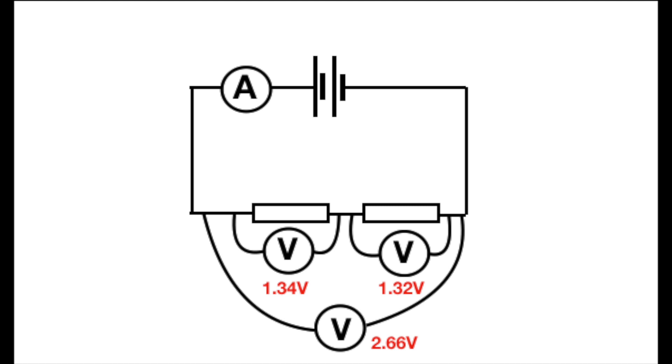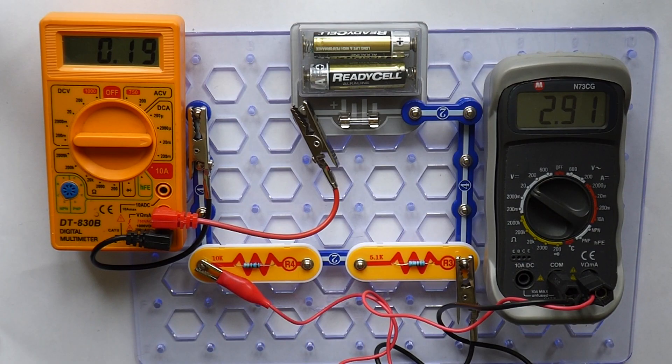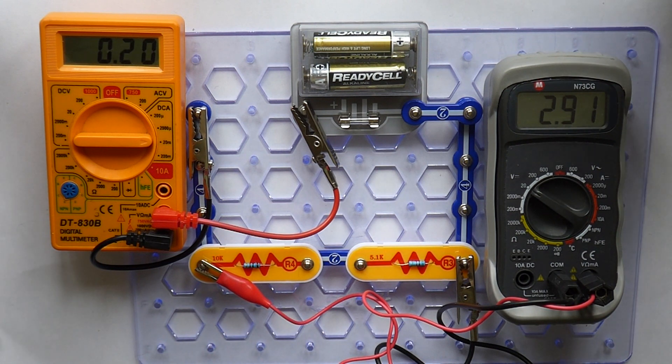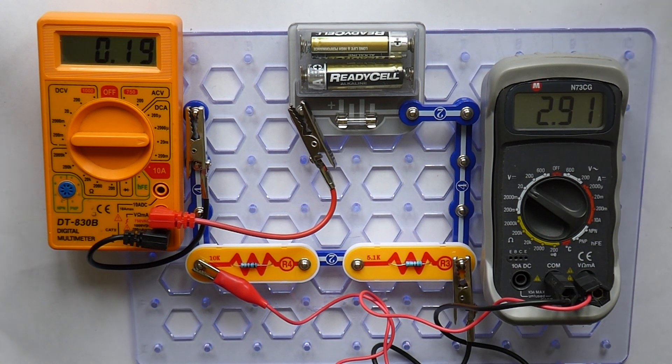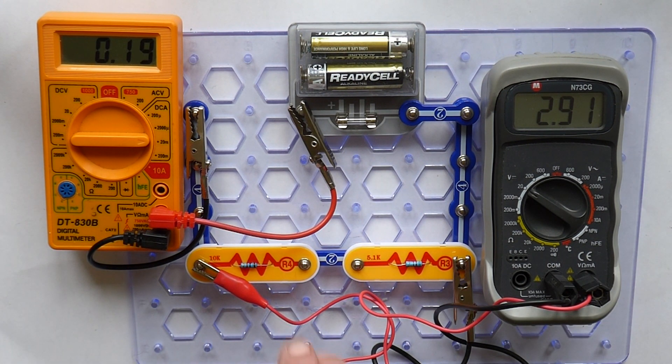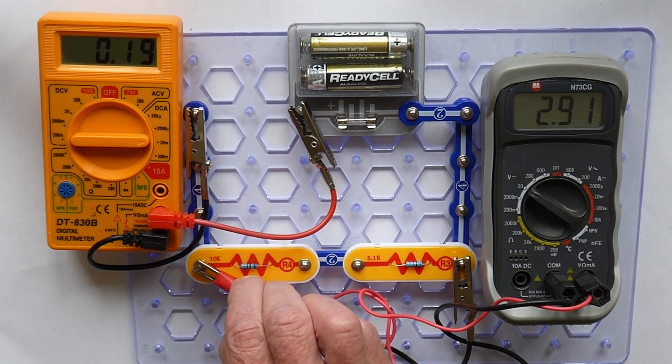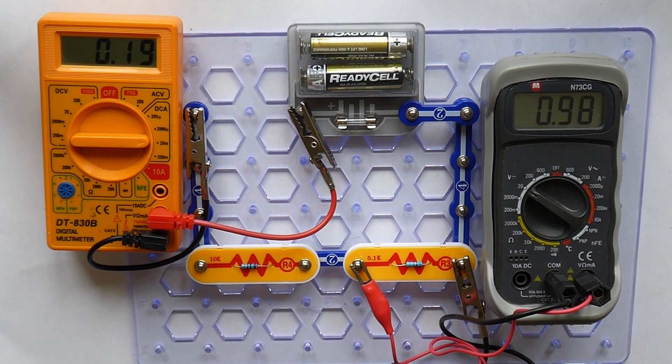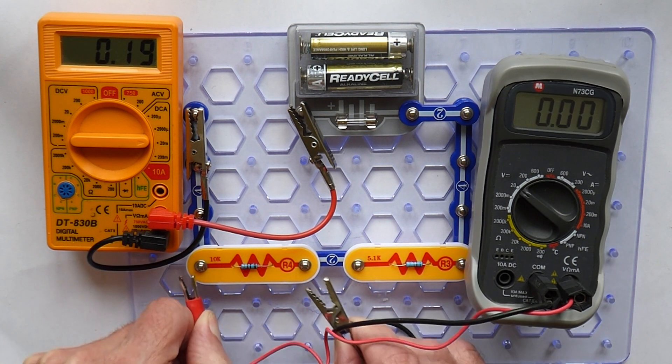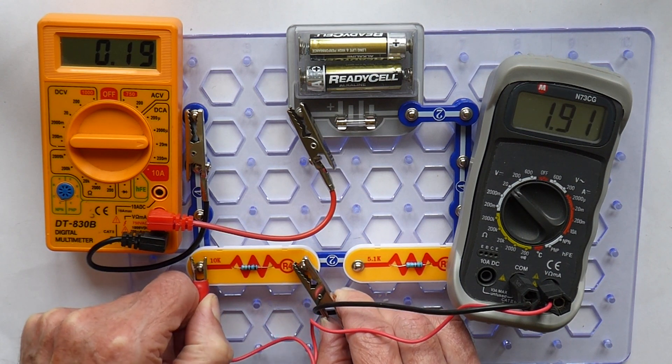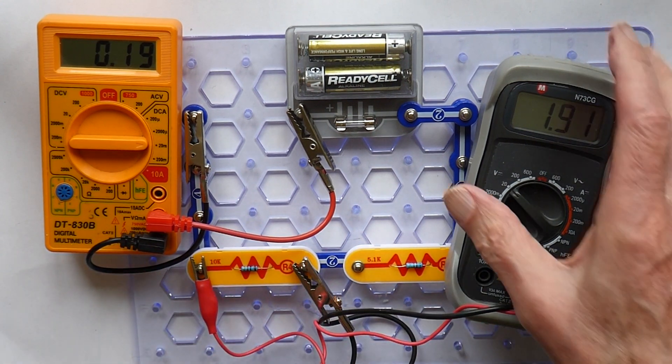Doing the same thing again with two resistors, this time not equal. You can just about make out the right hand resistor. The potential difference across both resistors is 2.91 volts. Moving the connection to measure, first of all the potential difference across the right hand side is 0.98 volts, and across the larger resistor on the left hand side is 1.92 volts.